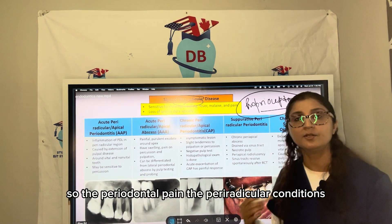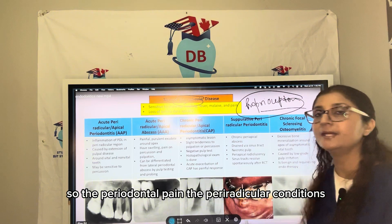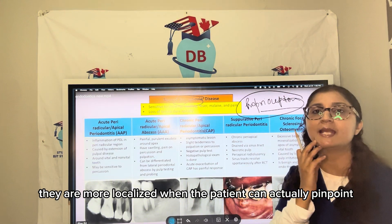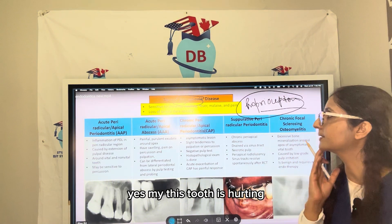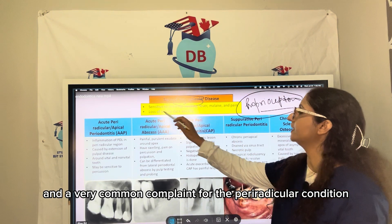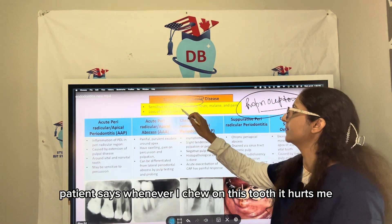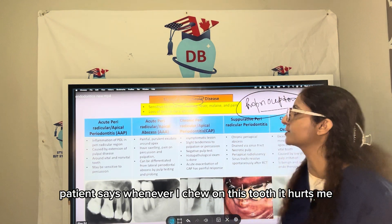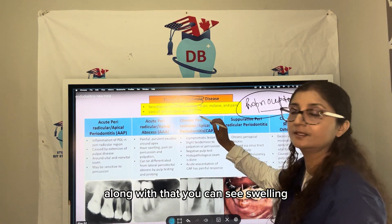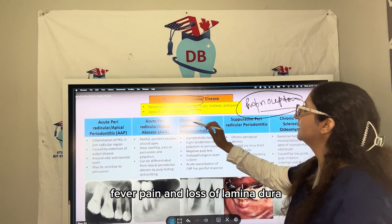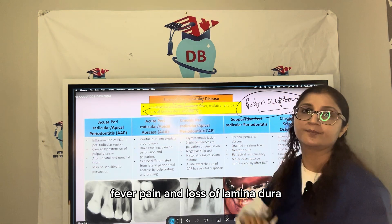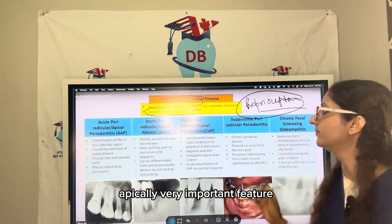Periradicular conditions are more localized — the patient can pinpoint exactly which tooth is hurting. A very common complaint is pain on chewing. You can also see swelling, fever, pain, and loss of lamina dura apically, which is a very important feature.